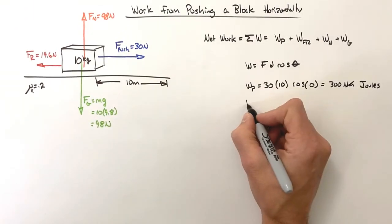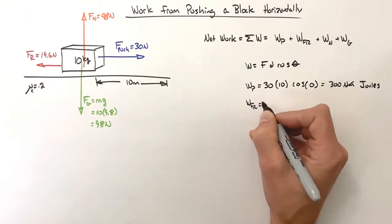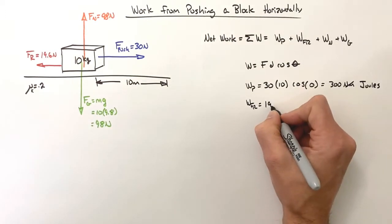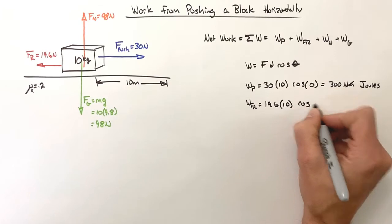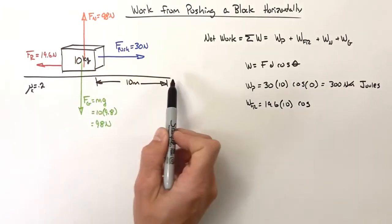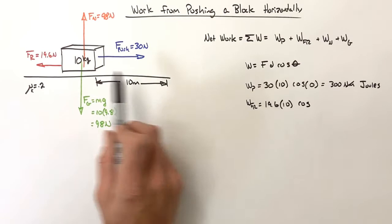Looking at friction, we have a similar story. The work by friction is 19.6 times 10 times the cosine of the angle between the force and the displacement. Now realize the displacement is forward, but the force is backward, so there's 180 degrees between the two.